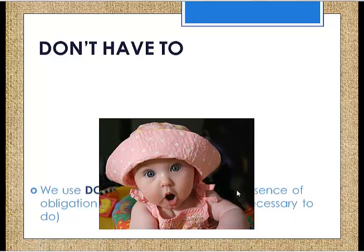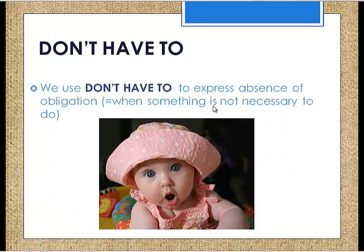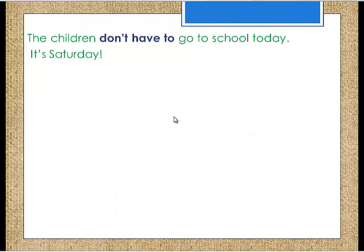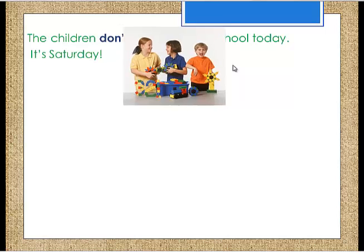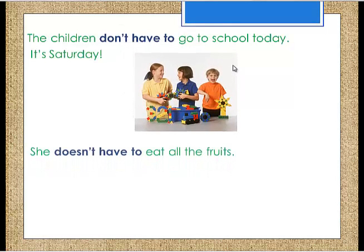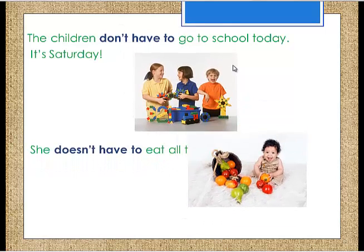Now, 'don't have to.' We use 'don't have to' to express absence of obligation — when something isn't necessary to do. So 'have to' expresses something necessary; 'don't have to' means something isn't necessary. For example, 'The children don't have to go to school today — it's Saturday.' 'She doesn't have to eat all the fruits.'